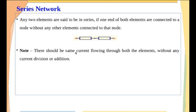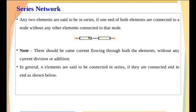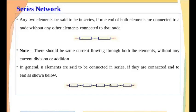Very important, dear students — there should be same current flowing through both elements without any current division or addition. For example, if a current I flows through this element, then the same current I should flow through the next element. In general, if any number of elements are connected in series end to end — first element connected to second, second to third — we can connect any number like this. All five elements are connected in series and the current through all five elements will be the same.